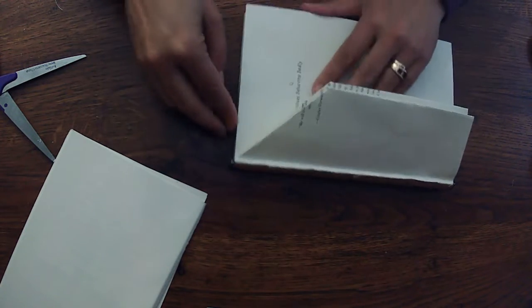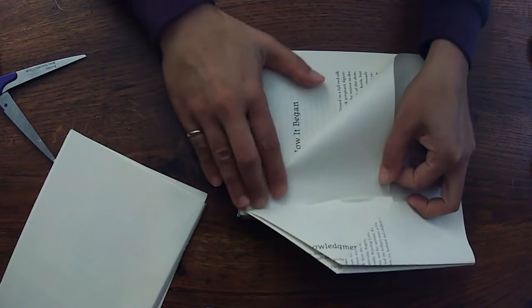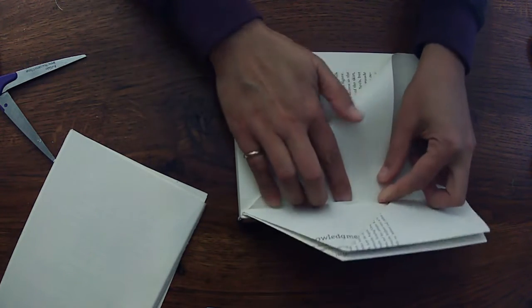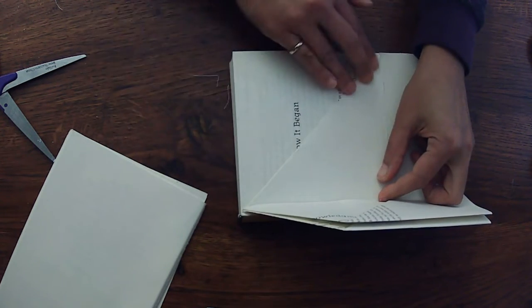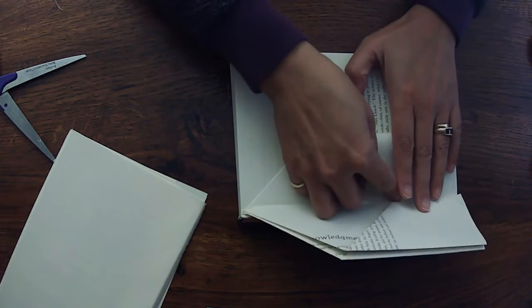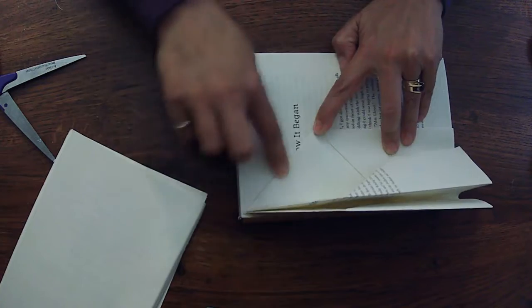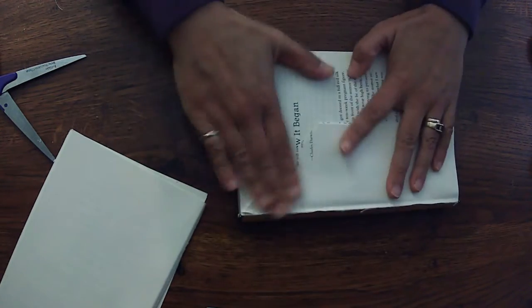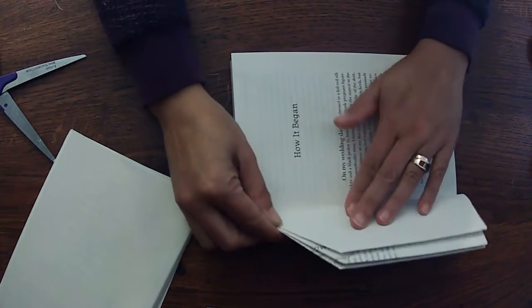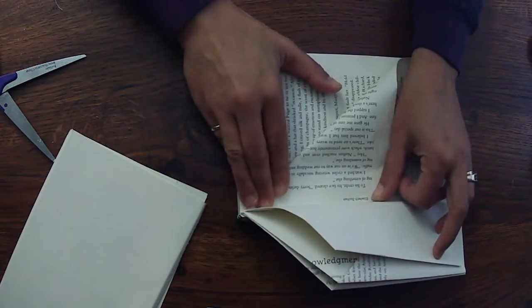Now we're going to do it the opposite way. We're going to take this corner, we're going to tuck it in so it's flush with the spine, like that, make our first triangle and fold in so that's flush with the spine. And we're just going to keep doing that for the first section.